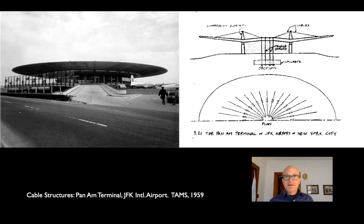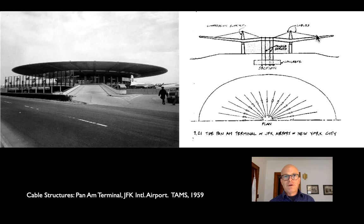Another building from the same era — one of my favorite cable-stayed buildings because it's architecturally very clever. This was a terminal at JFK Airport in 1959. Looking at this section, we have masts going around an elliptical plan. There are pin connections there and there so the roof can rock back and forth a little bit. From the top, cables hold up this big overhanging roof, designed to keep rain off people coming out of the terminal and getting onto planes — this is the era before enclosed jet bridges — and a cable going back from the tower to balance that cantilever.